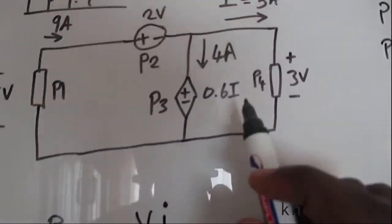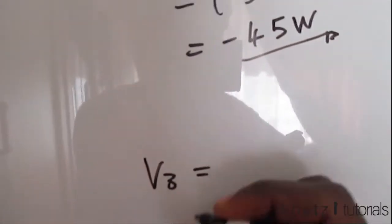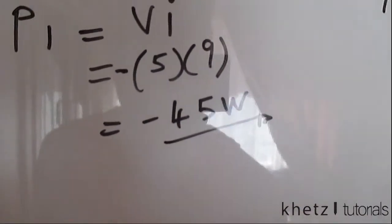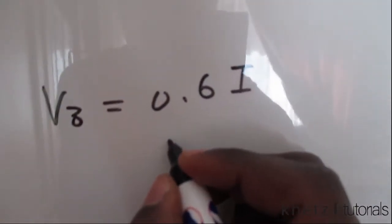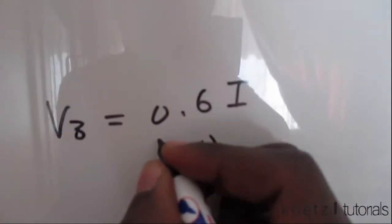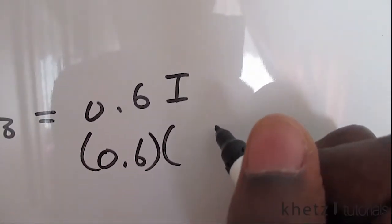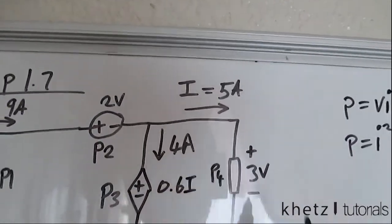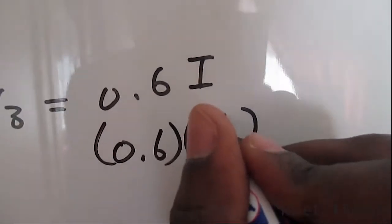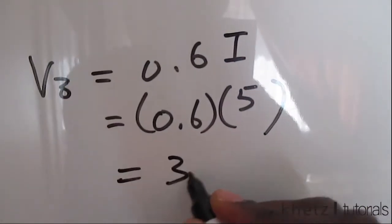So to find the value of V, let's call it V3. You say 0.6 I and I is given as 5. 0.6 multiplied by I to find the value of the voltage source. I, which is given to us is 5. So multiply by 5. That should give you 3. So this is 3 volts. So the value of this voltage source is 3 volts.